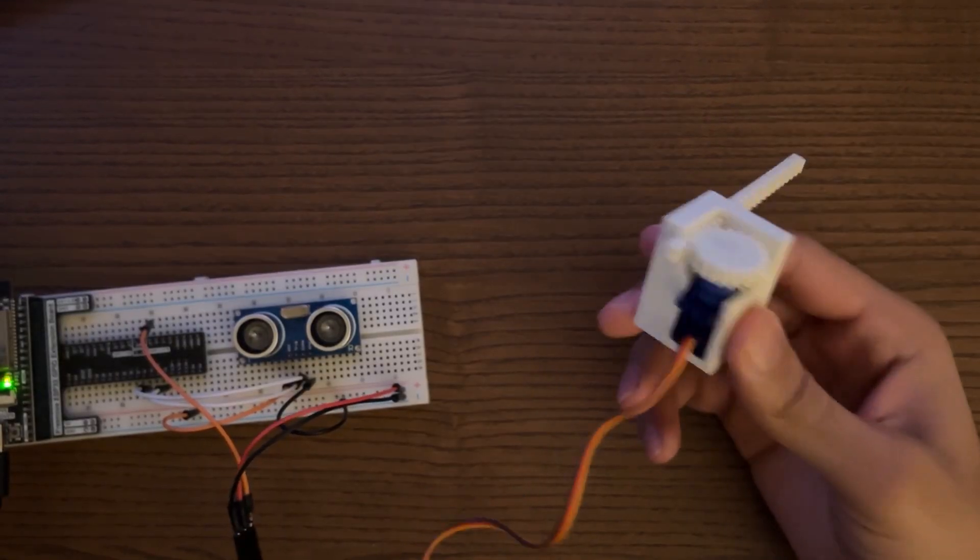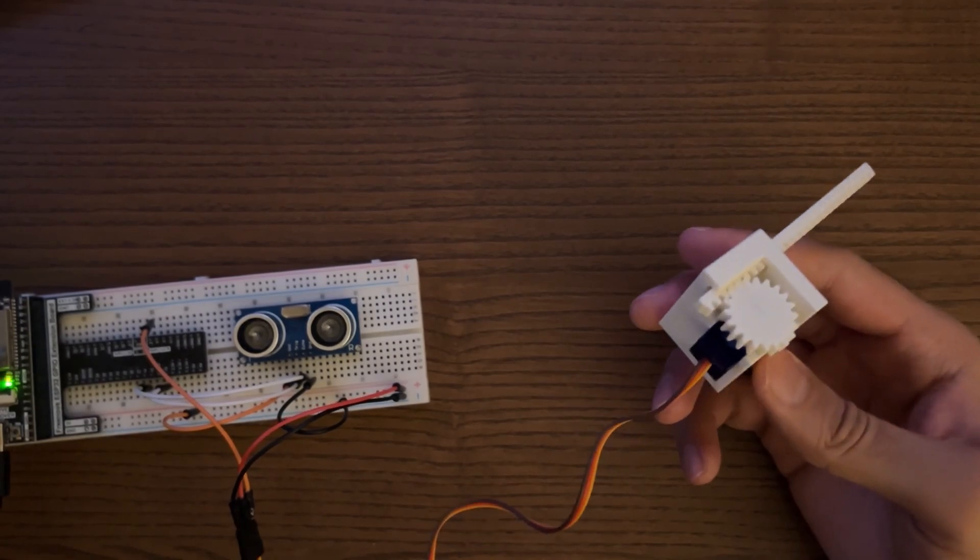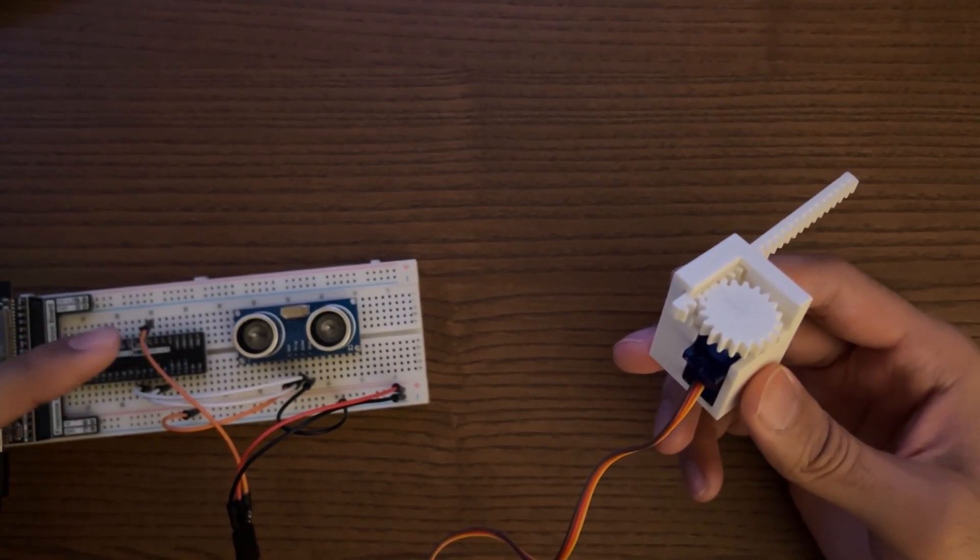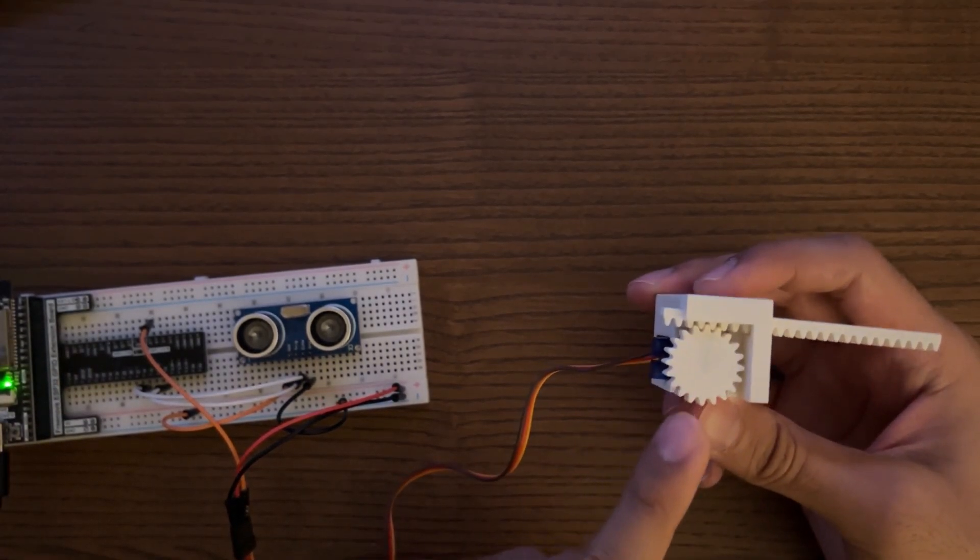Here I have this servo connected to an ESP32 module and a distance sensor. The way I'm using the servo is that when anything is within 30 centimeters of the sensor, the gear will turn 180 degrees counterclockwise.